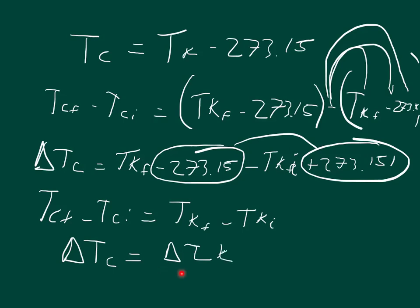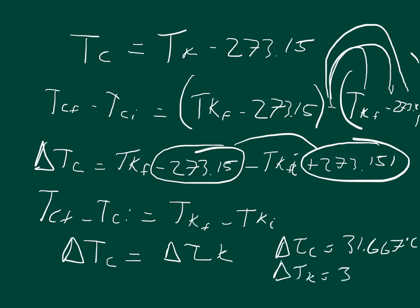Every time the temperature in Kelvin goes up one degree, that same temperature converted to Celsius also goes up one degree. At 0 K we're at −273.15°C; at 1 K we're at −272.15°C; at 2 K we'd be at −271.15°C; at 3 K we'd be at −270.15°C — and on and on. One change here equals one change here. So we know the change in temperature in Celsius was 31.667°C, meaning the change in temperature in Kelvin is exactly the same: 31.667 K.